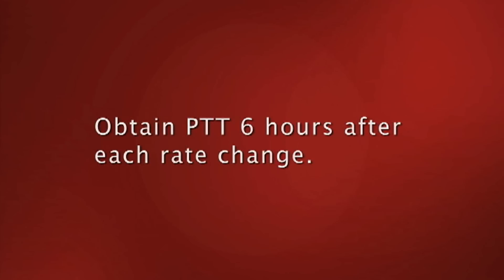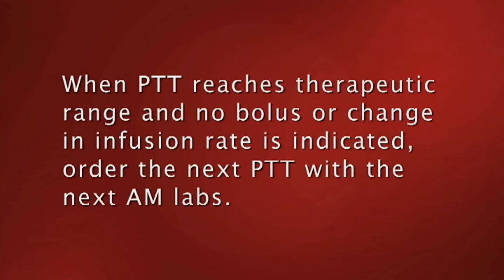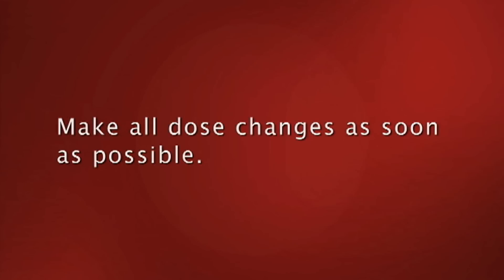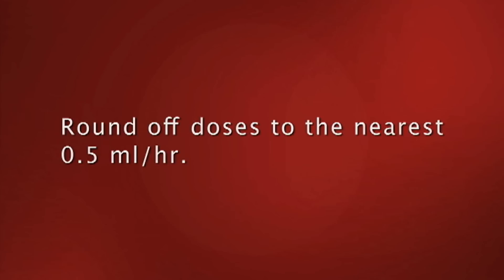Number four: obtain a PTT six hours after each rate change. Number five: when PTT reaches therapeutic range and no bolus or change in infusion rate is indicated, order the next PTT with the next AM labs. Number six: make all dose changes as soon as possible. Number seven: round off doses to the nearest 0.5 mls per hour.